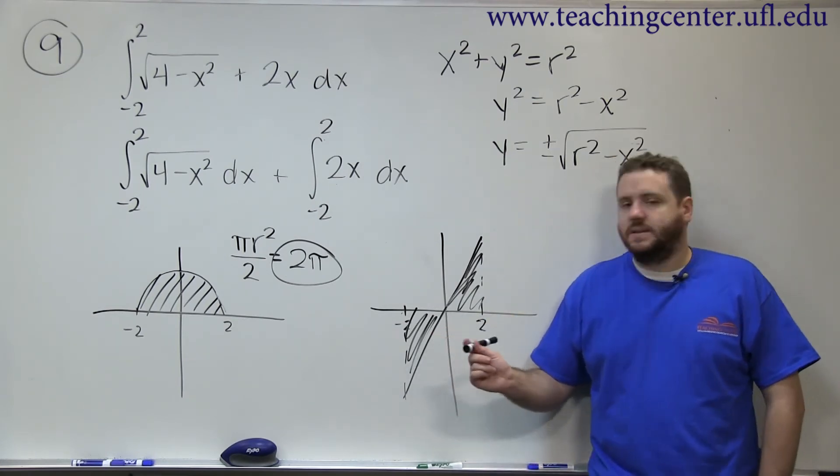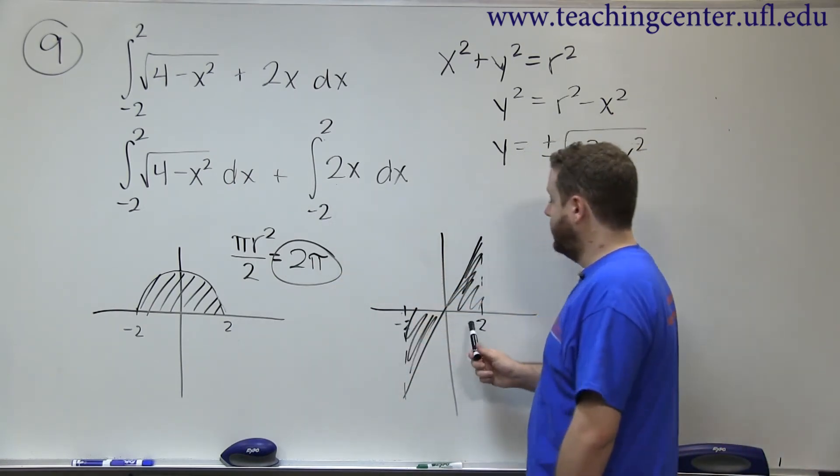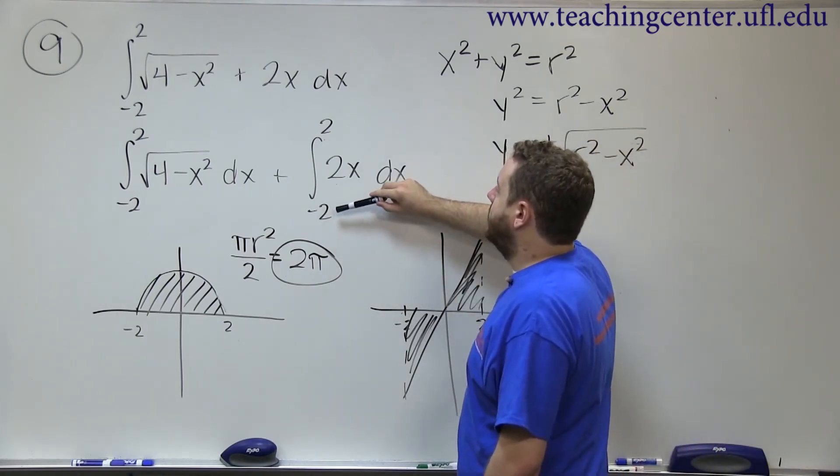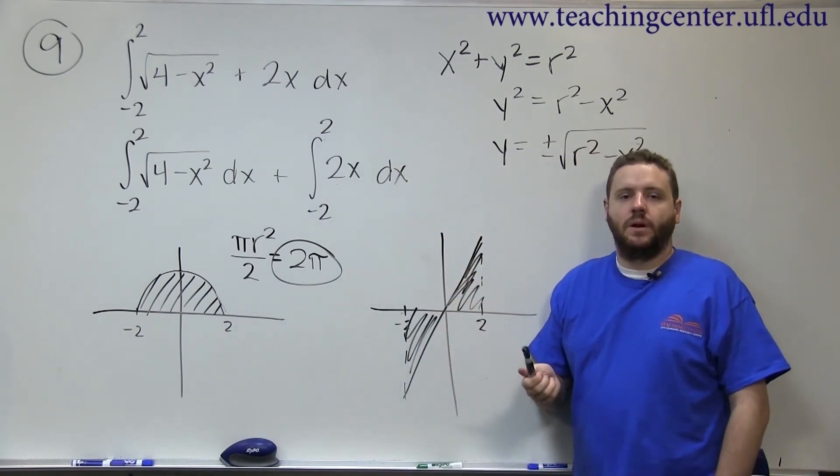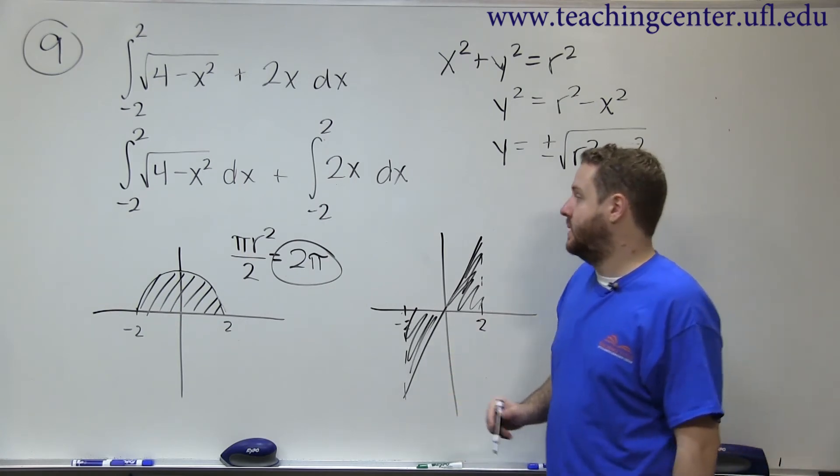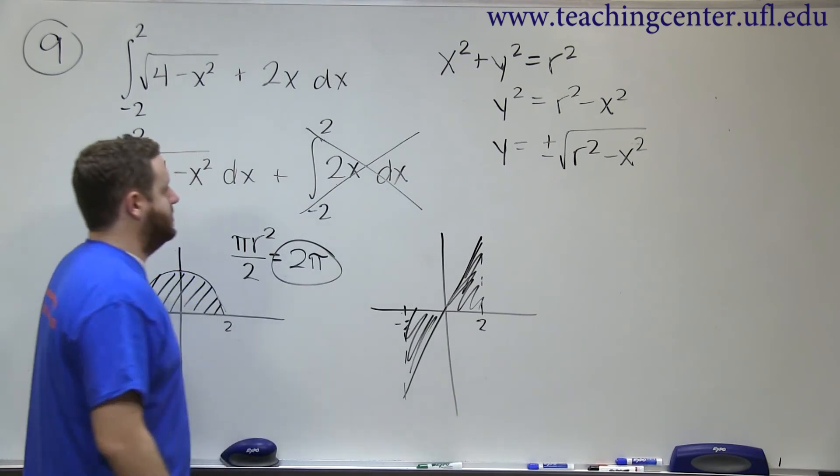But what you might notice is since this function goes through the origin and it's odd, 2x is an odd function. If you take the integral from any negative number to the same positive number, this is always going to be 0 because these two things have the same area, but this one's under the axis. So this part is just 0.